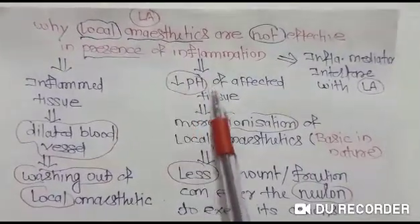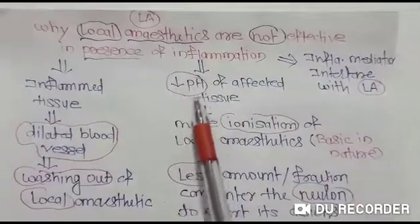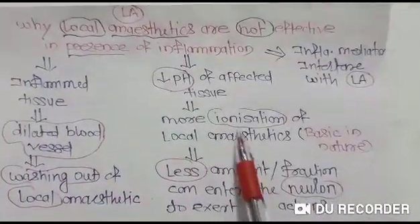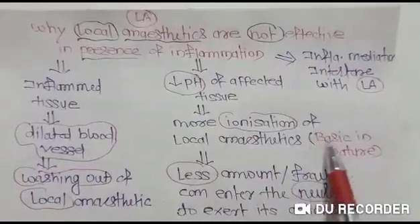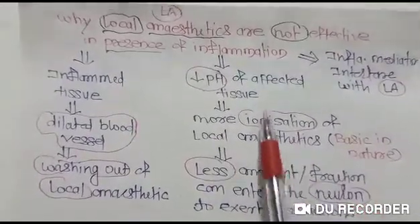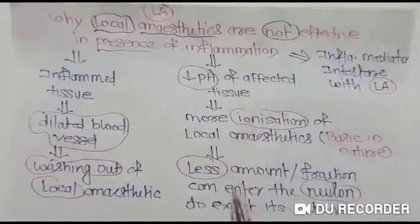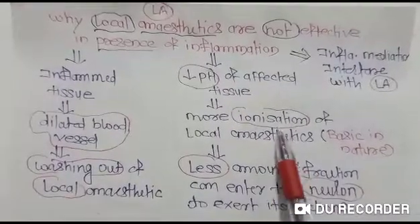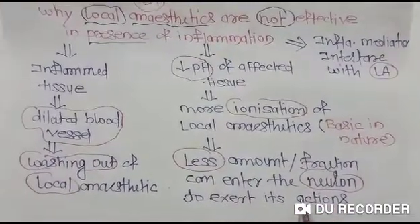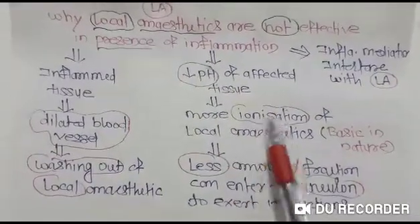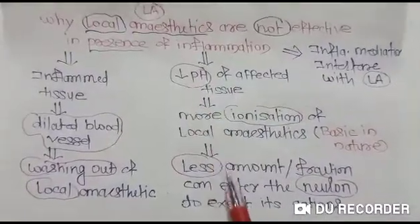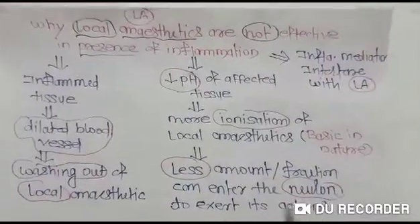The second reason: in the presence of inflammation there is a decreased pH of the affected tissue. Because of this decreased pH, there is more ionization of the local anesthetics. Local anesthetics are basic drugs, so they become more ionized and more polar. This means less of the drug can enter into the neuron to exert its action.